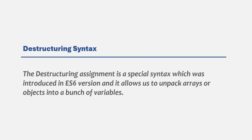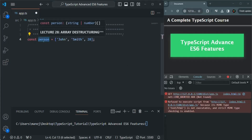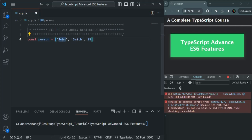We will learn how we can use destructuring syntax to unpack elements of an array into a bunch of variables. Let's go to VS Code. Here we have an array called person and this array contains three elements: John, Smith, and 28.